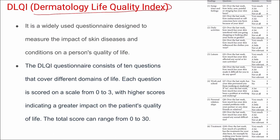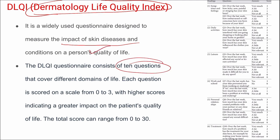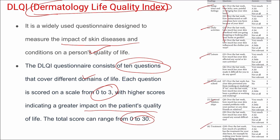Next is the Dermatology Life Quality Index (DLQI), used to measure the impact of skin diseases on a person's quality of life. It consists of 10 questions covering different life domains, each scored 0 to 3, with higher scores indicating greater impact on quality. Total possible scores range from 0 to 30.